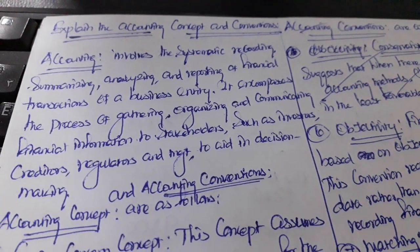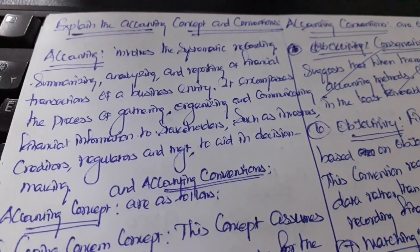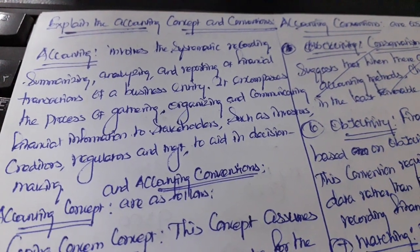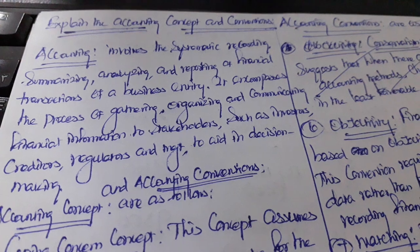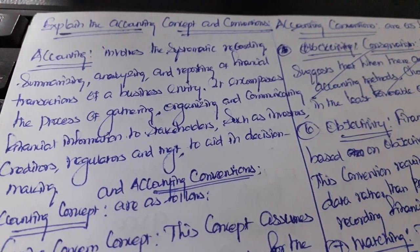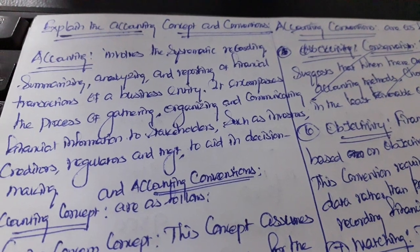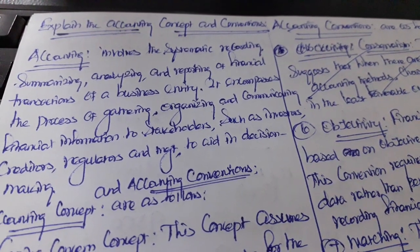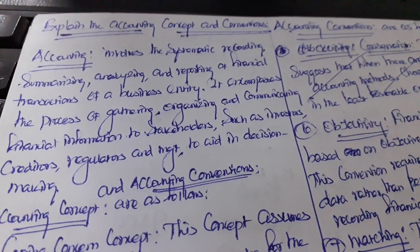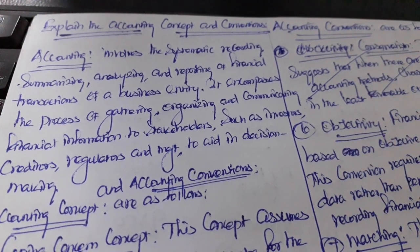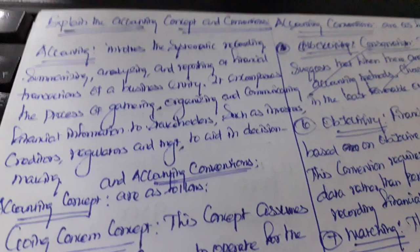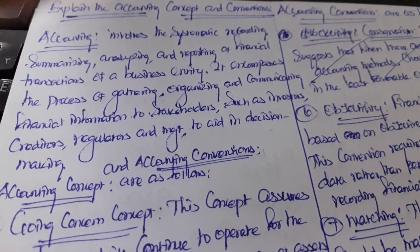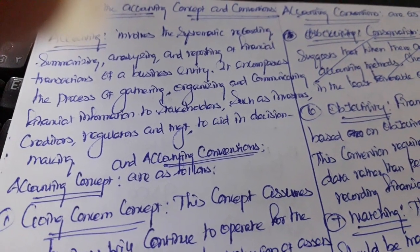Accounting aids in decision making. We need to record financial transactions systematically, then summarize and analyze the data, and report to end users. It includes the process of gathering, organizing, and communicating financial information to end users such as investors, creditors, regulators, and management. This information helps in making decisions.